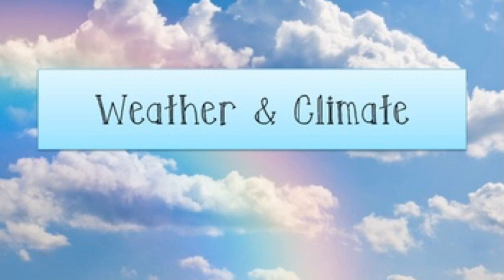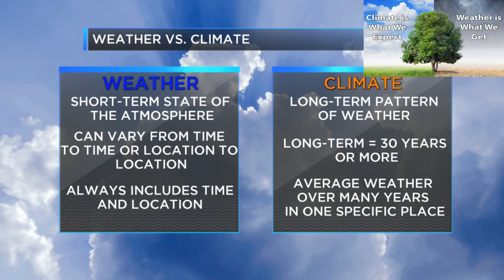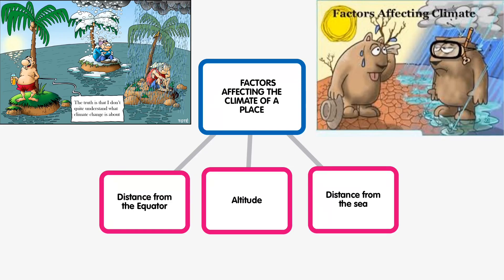Let's understand the difference between weather and climate. Climate is an established pattern of weather over a long period of time, particularly over 30 years. Weather is the day-to-day variation of conditions of the atmosphere. To summarize, weather refers to how hot, cold, rainy, windy, or cloudy it is at a particular place or time. When you say the Himalayan region is very cold or coastal plains are very humid, you are talking about climate.